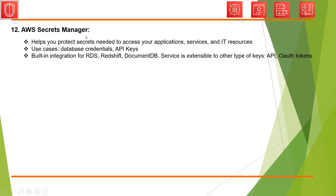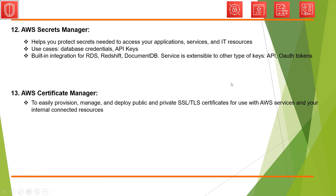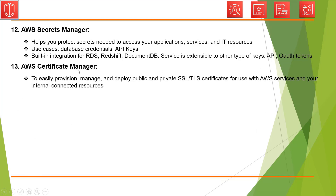The next service is AWS Secrets Manager. As the name says, it helps you manage various secrets such as database credentials and API keys. This service also offers built-in integration for RDS, Redshift, and DocumentDB. Of course, you can also extend this service to other keys such as API keys or OAuth tokens.